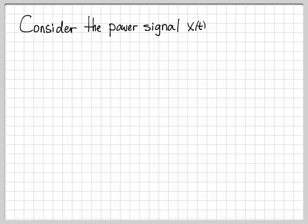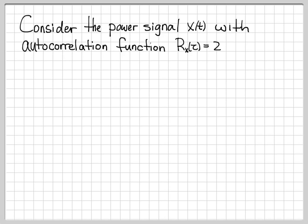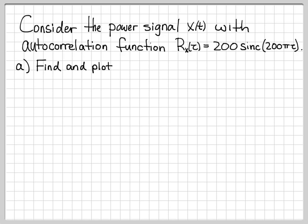We're working with a power signal x(t). This power signal x(t) has an autocorrelation function given by rx(τ) = 200 sinc(200πτ). So this is the autocorrelation function of this signal, and we're going to do a variety of computations related to this power signal. In part A, we are going to find and plot Sx(f), the power spectral density of the signal x(t).